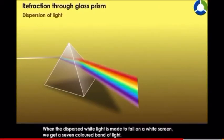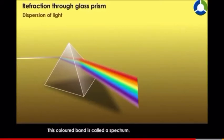When the dispersed white light is made to fall on a white screen, we get a seven-colored band of light. This colored band is called a spectrum.